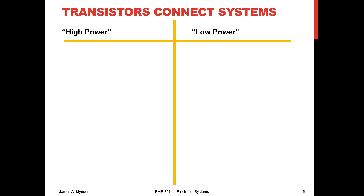Transistors connect systems, typically between low power and high power, because we're using low-power signals going in and then amplifying or switching based on them. My rule of thumb — and this is not hard and fast, just for what we tend to do in class — I consider low power to be on the order of 3 or 5 volts, around 10 milliamps, things you might use with a microcontroller or Arduino. High power is greater than 100 milliamps, greater than 5 volts — things like motors, things that might kill you.